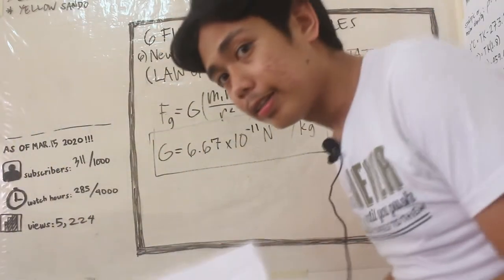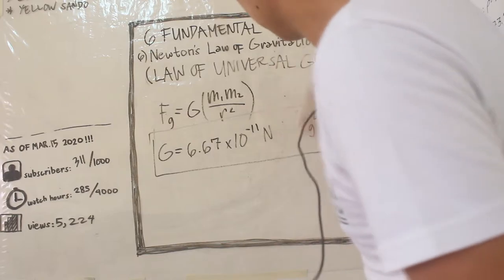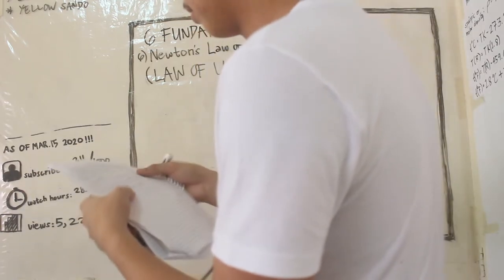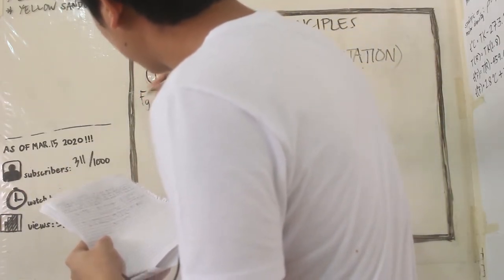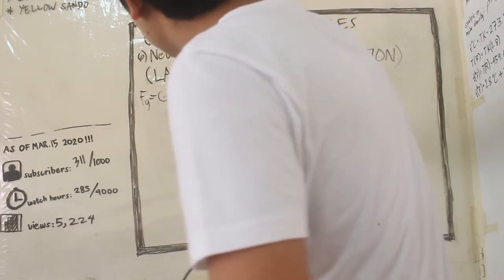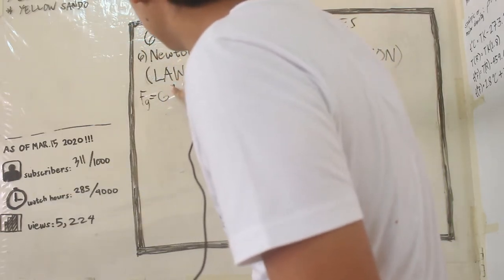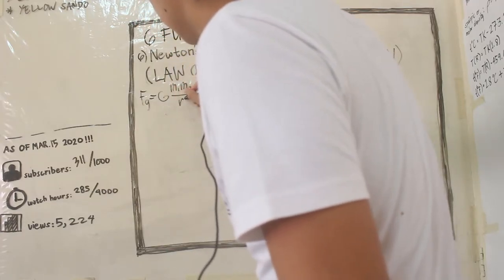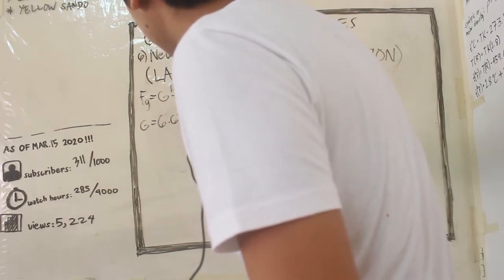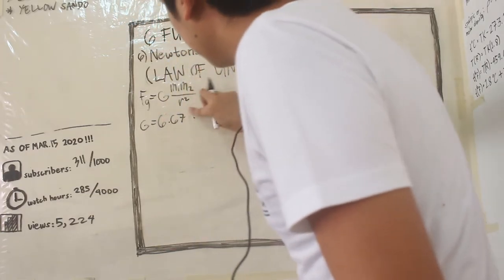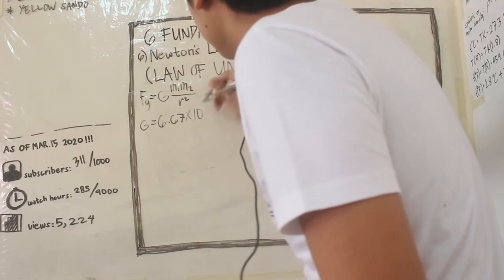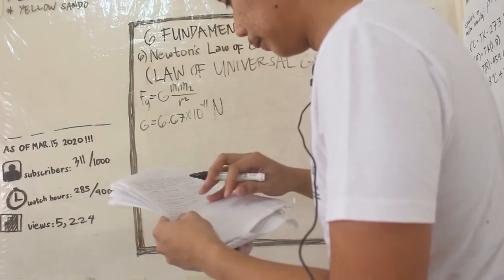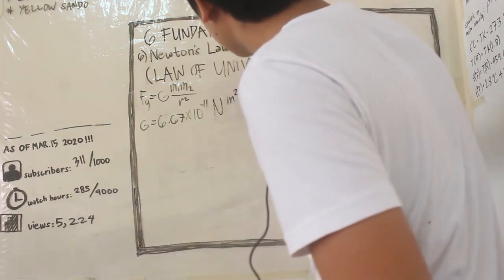Now we have an example. Wait, let me rewrite this smaller so we can have bigger space for our solution. So Fg equals mass of object one times mass of object two over r squared, where G equals 6.67 times 10 raised to negative 11 newton meter squared per kilogram squared.